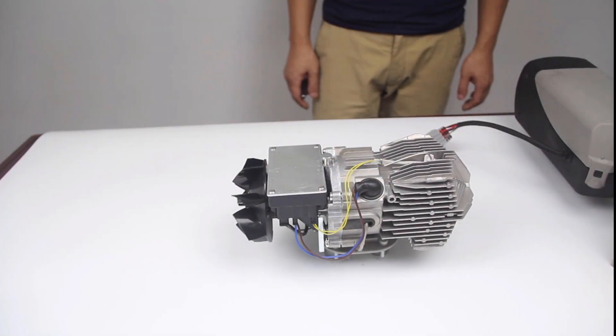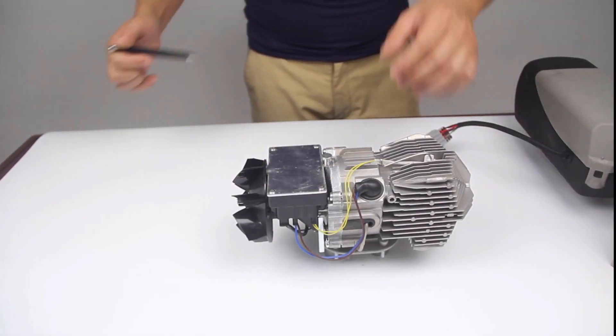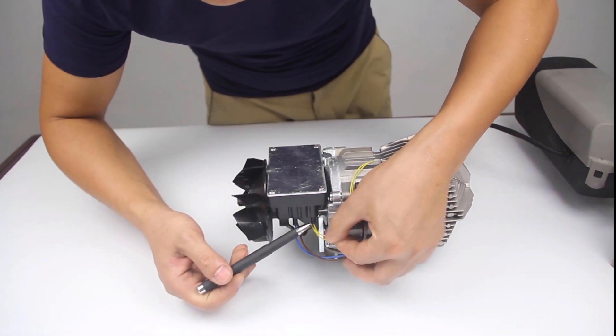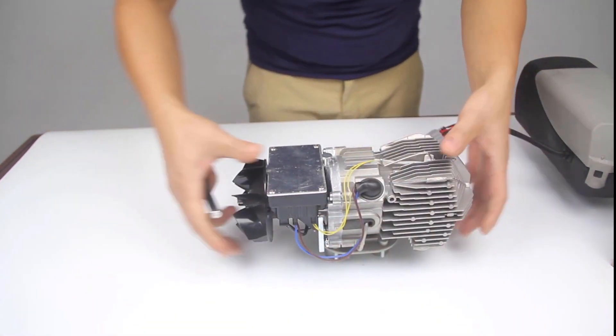Error code 3, flame temperature exceeds the maximum safe running temperature. To fix error 3, we need to check two places. First, we need to check the temperature sensor, making sure that it is securely fastened.